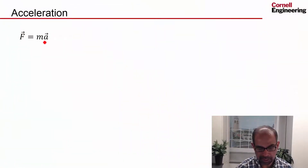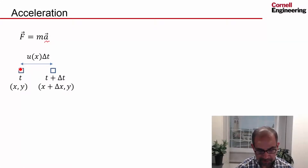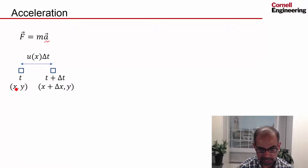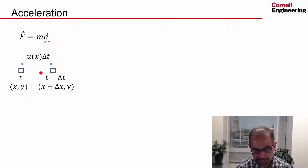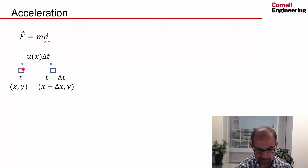Let's take a look at the acceleration of the infinitesimal fluid particle written in an Eulerian frame of reference. I'm looking at the term in F equals ma. This is my infinitesimal fluid particle at time t, shown at some location x, y. Restricting its motion to the x direction to keep things simple, at time t plus delta t, it has moved a distance delta x, so it's at x plus delta x, y. The amount it moved is given by the velocity times delta t.